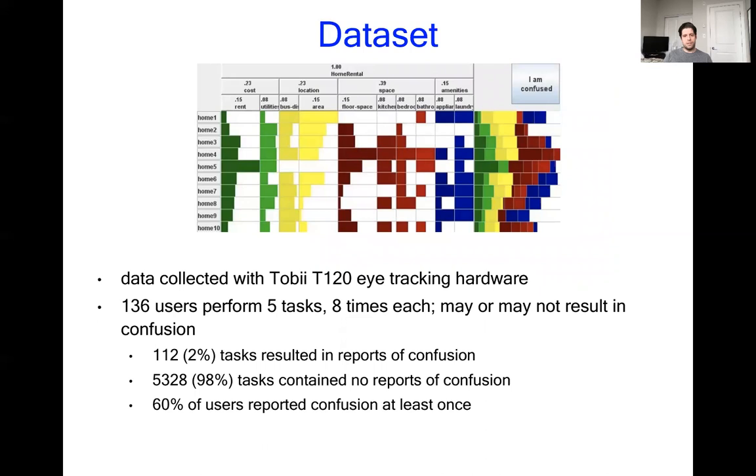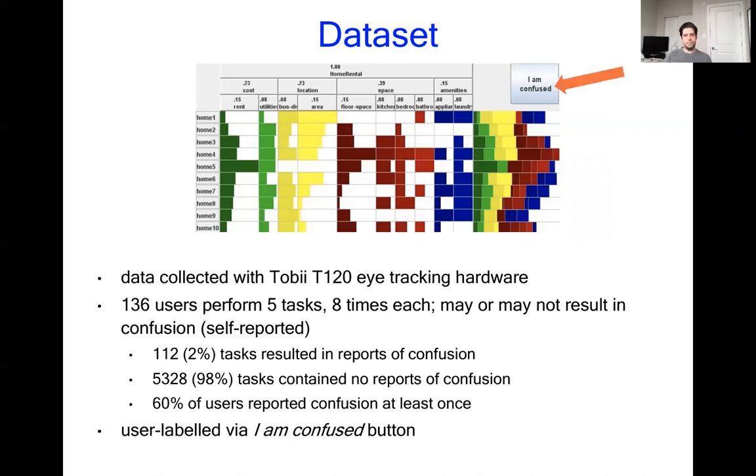The data set was collected with a Tobii T120 eye tracker. 136 users performed five tasks like the one just provided, repeated eight times each. In the end, there were 112 tasks that had reports of confusion and over 5,000 that didn't. However, 60% of the users reported confusion at least once, which tells us this is still a state worth addressing. The labels for this data set were collected by self-report. The user clicked a button, like the one we see in the top right-hand corner, labeled I am confused, which was then confirmed to be a true instance of confusion with the study administrators later on.